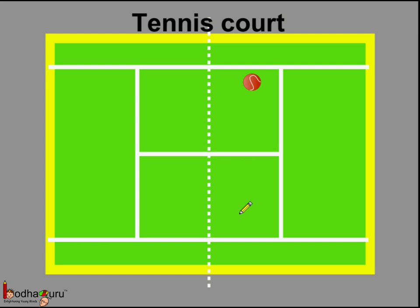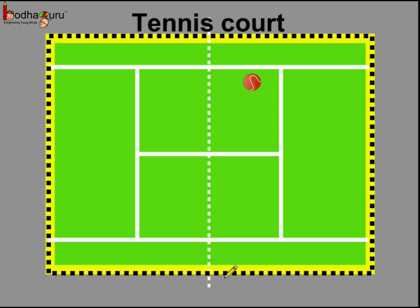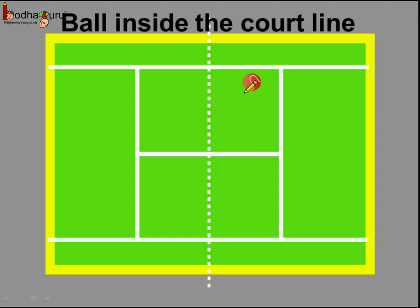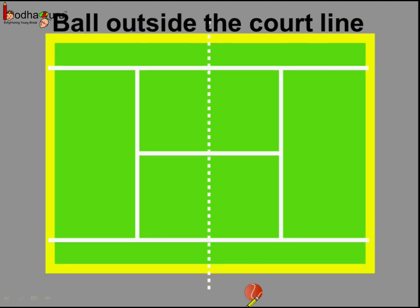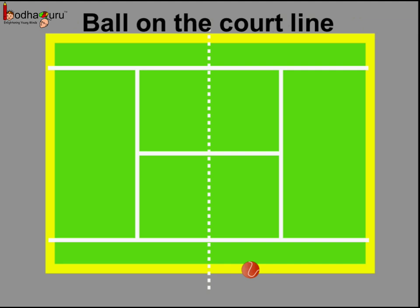This is the same kind of reference which we use during play, for example tennis. This is the tennis court and the yellow border is the boundary, or you can say it is the court line. If we talk about the position of the ball with reference to this court line — here we can say the ball is inside the court line. And now the ball is here, we can say the ball is outside the court line. And lastly, here we can say the ball is on the court line. This is how we decide the position of the ball with reference to the court line.